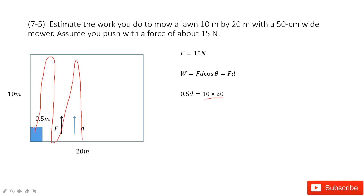The mover's width is 0.5 meters, times the length — and that length is just how much the mover has moved. So this distance, plus this distance, plus the next distance, and so on, equals exactly the total distance D that this mover moves.